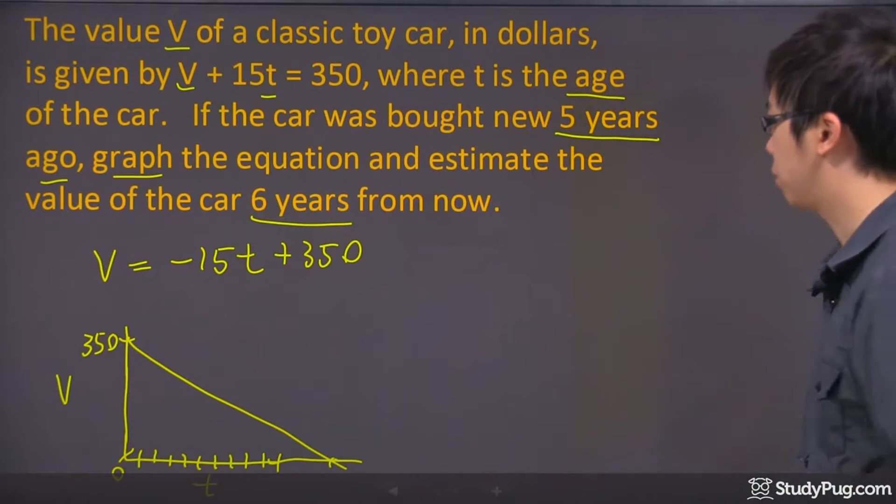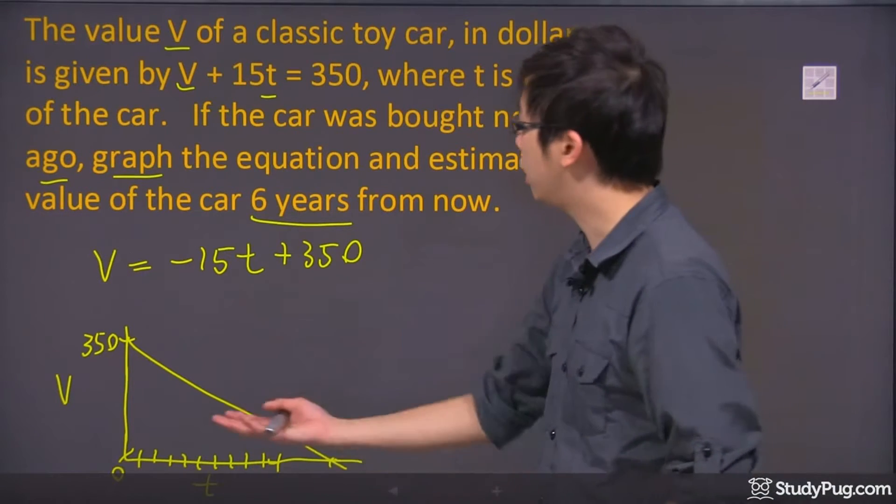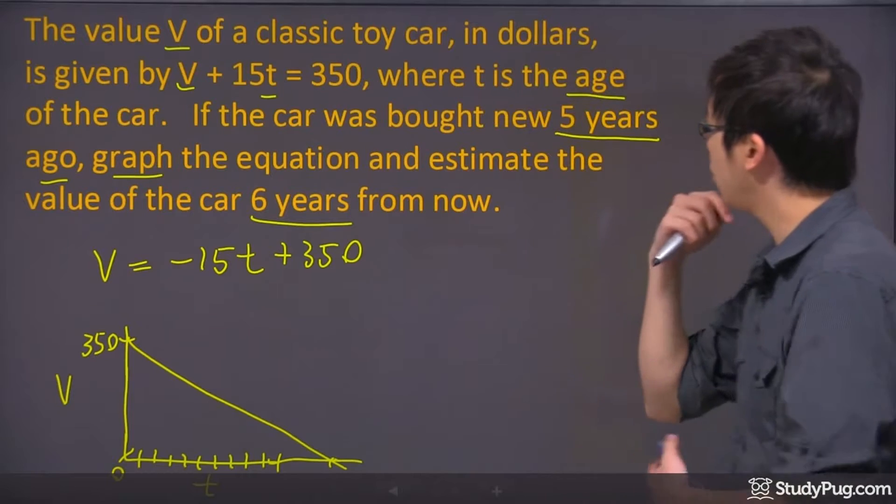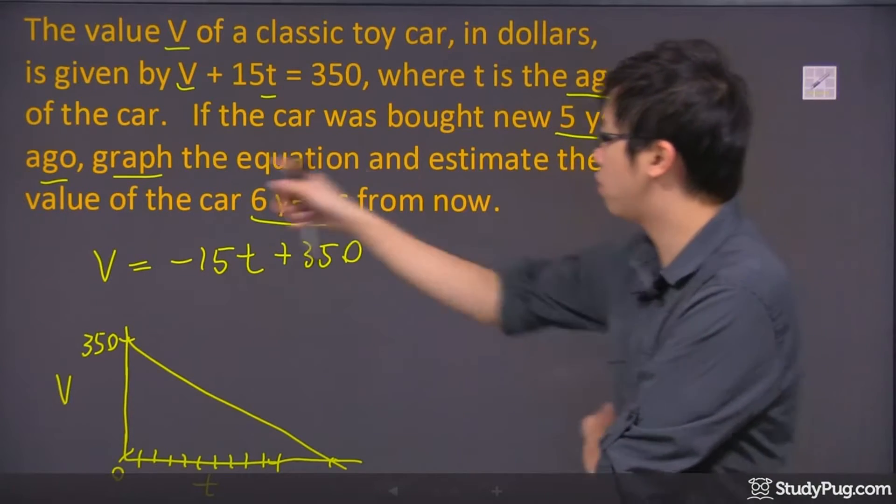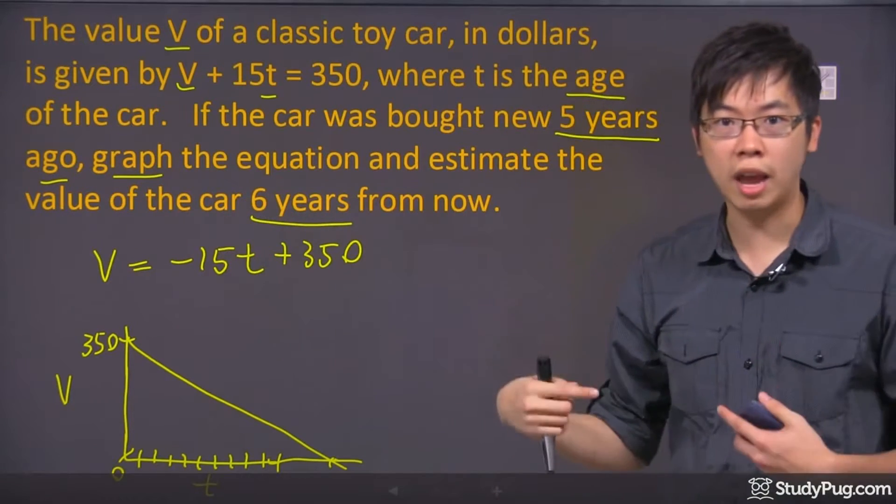And you can't get anything less than zero. So that's basically the relationship of this graph. But we're trying to figure out the estimated value of the car six years from now.